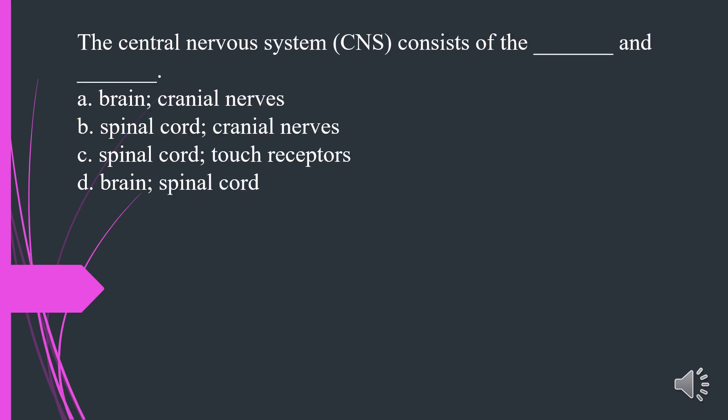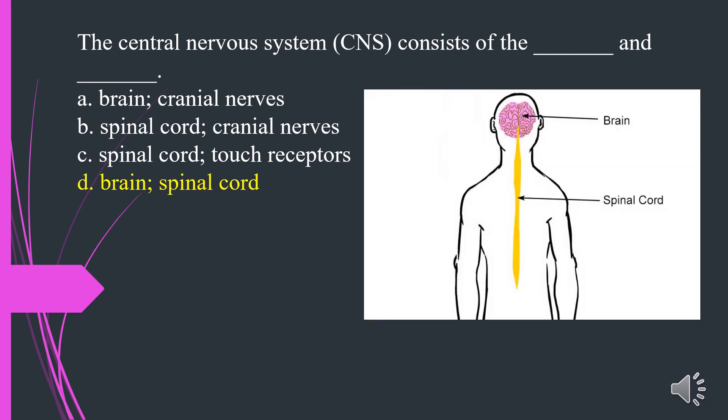The central nervous system (CNS) consists of what? A. Brain, cranial nerves. B. Spinal cord, cranial nerves. C. Spinal cord, touch receptors. D. Brain, spinal cord. The answer is D. Brain, spinal cord.